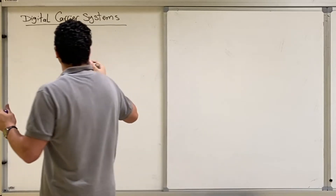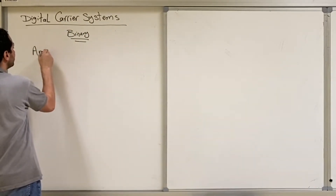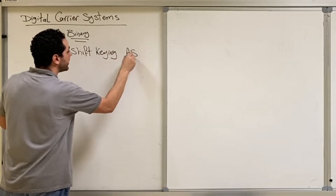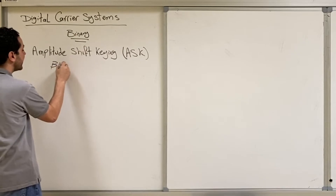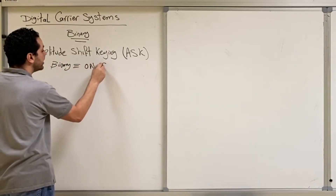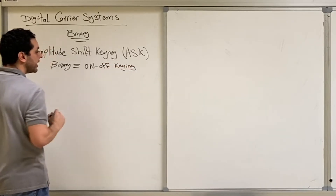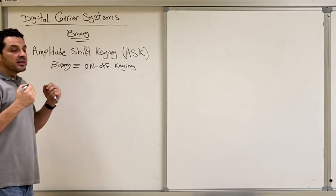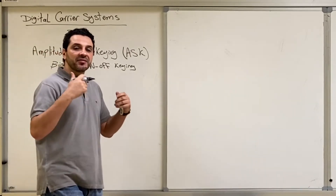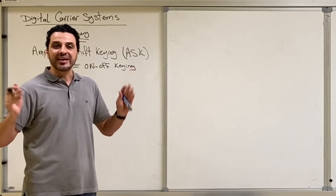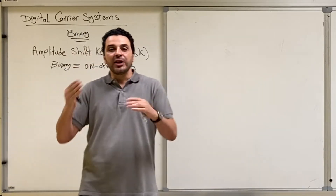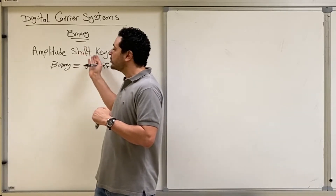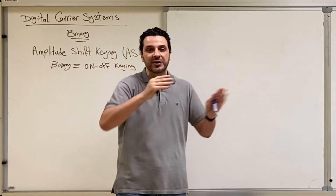The amplitude modulation is called here Amplitude Shift Keying, abbreviated as ASK. In the binary case, we sometimes call it On-Off Keying, for a reason that will be clear in a few minutes. The phase modulation is called Phase Shift Keying, and the frequency modulation is called Frequency Shift Keying. In addition to the naming, we have only two levels — you want to transmit binary one or binary zero. So you need only two amplitudes for ASK, only two phases for PSK, and only two frequencies for FSK.